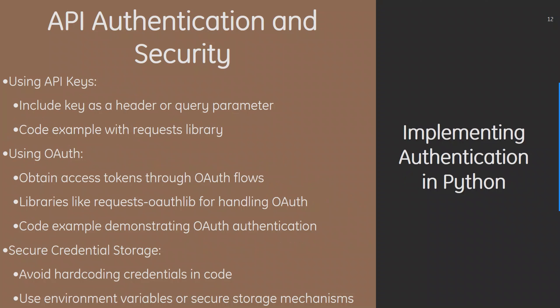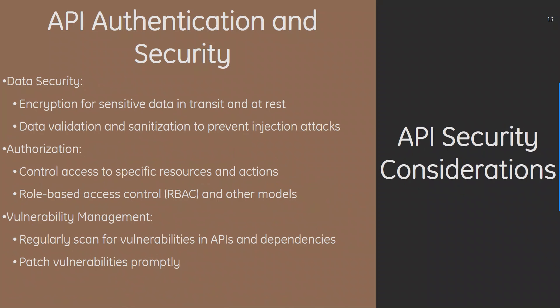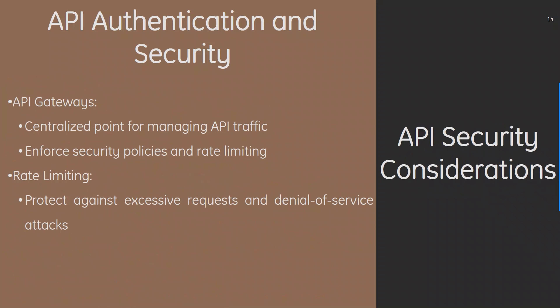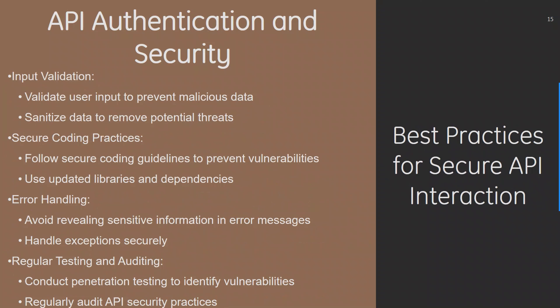For secure credential storage, avoid hardcoding credentials in code — use environment variables or secure storage mechanisms. Data security includes encryption for sensitive data in transit and at rest, data validation and sanitization to prevent injection attacks, authorization to control access to specific resources, and role-based access control (RBAC). Vulnerability management involves regular scanning for vulnerabilities in APIs and dependencies and patching them promptly. An API gateway serves as a centralized point for managing API traffic, enforcing security policies and rate limiting. Rate limiting protects against excessive requests and denial-of-service attacks.